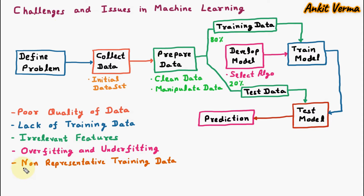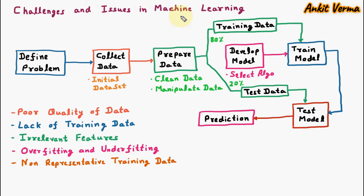The next challenge is non-representative training data. We use training data to train the model, but sometimes this training data becomes non-representative, meaning it fails to represent anything and fails to train the model properly. This is also a challenge in machine learning.